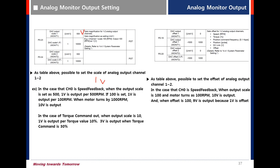In the case of torque command output, if the output scale is 10, then 1 volt output corresponds to 10 percent torque command.